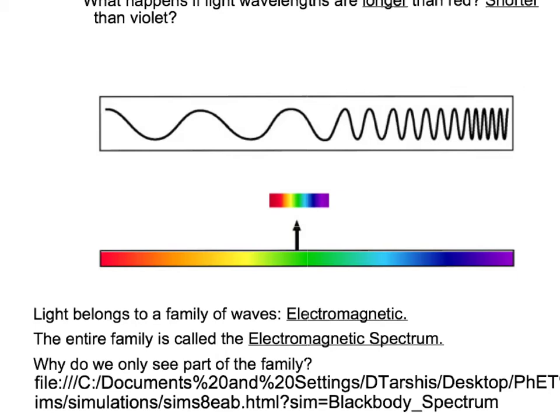This video is a brief introduction to light. Light belongs to a family of waves called electromagnetic, and the list of all the waves that are electromagnetic is called the electromagnetic spectrum.